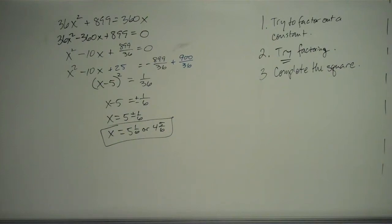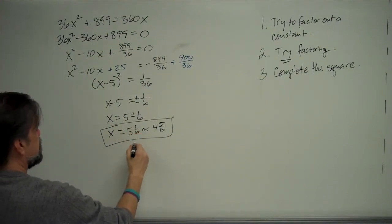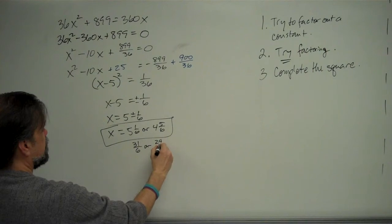And could we have factored this? Yeah, I guess we could have at the very beginning. We could have said, let's see, 5 and 1 sixths is the same thing as saying 31 over 6. And 4 and 5 sixths is 29 over 6.